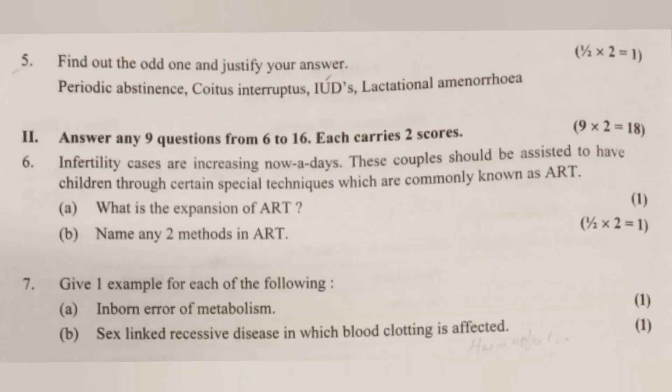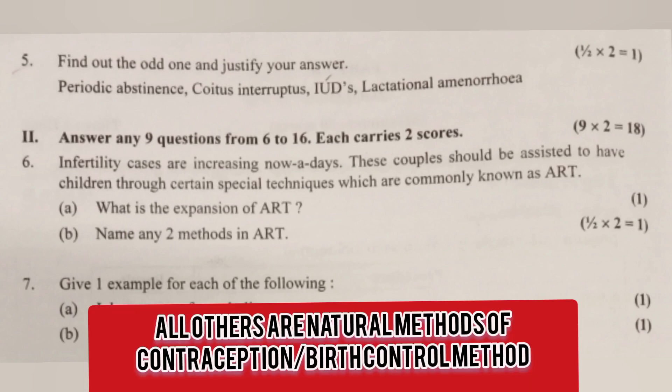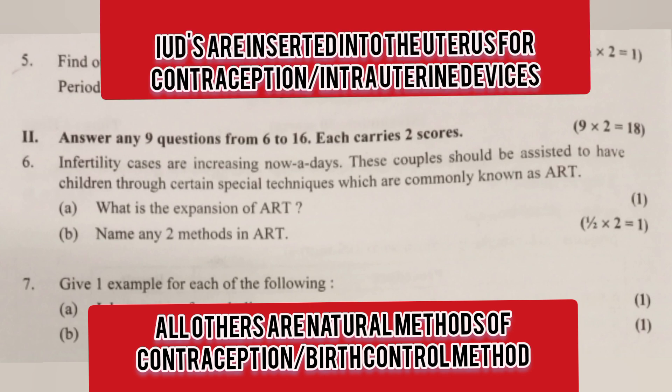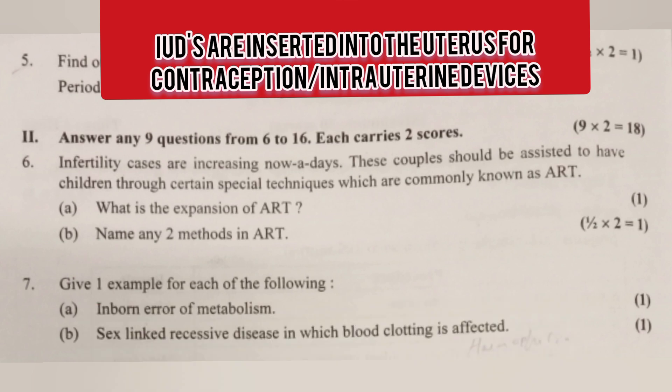Question 5: Find out the odd one and justify your answer. Options: Periodic abstinence, Coitus interruptus, IUDs, Lactational amenorrhea. Answer: IUDs. Reason: All others are natural methods of contraception or birth control, whereas IUDs are devices inserted into the uterus — intrauterine devices.